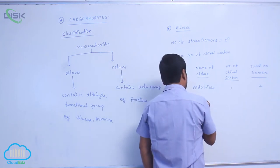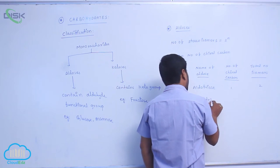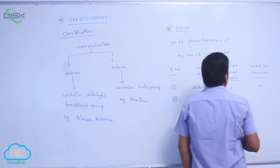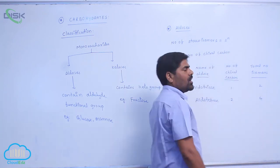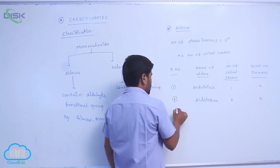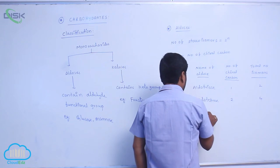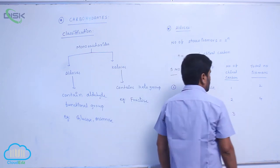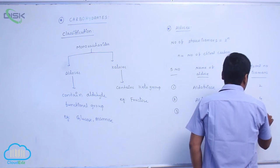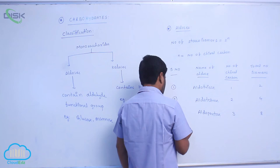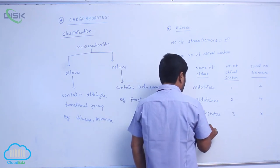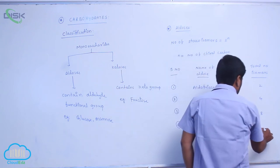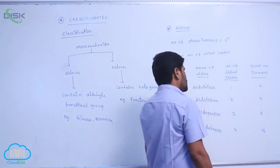For aldotetrose, the number of chiral carbons equals 2, so 2 to the power 2 gives 4 isomers. For aldopentose, the number of chiral carbons equals 3, so 2 to the power 3 gives 8 isomers. For aldohexose, the number of chiral carbons equals 4, so 16 isomers are possible.